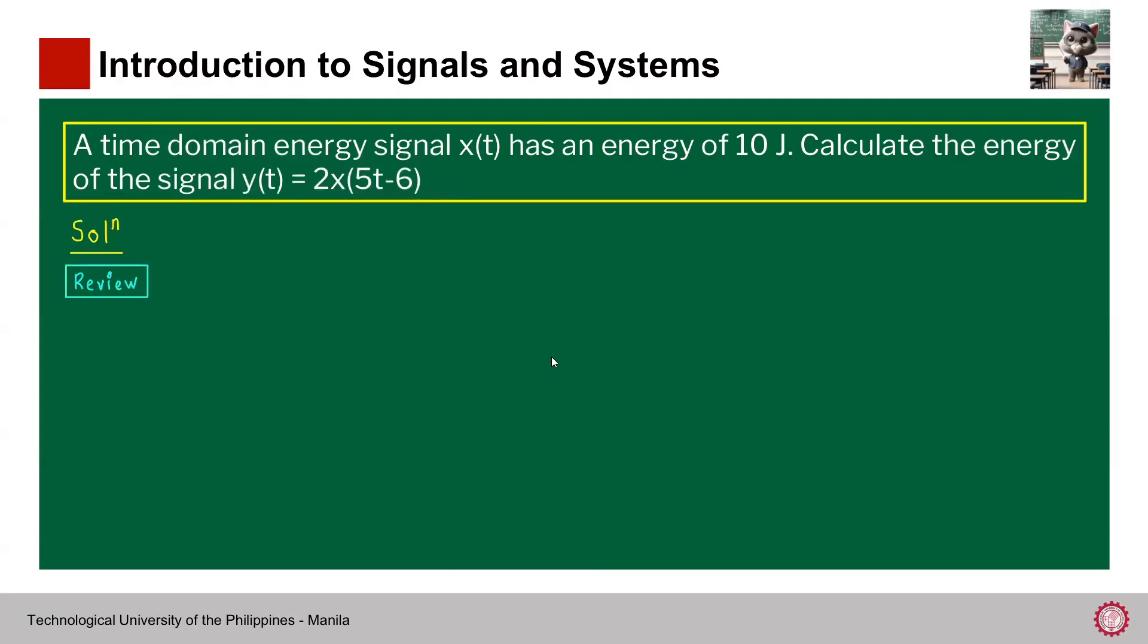So first, let's say that the signal x(t) has an energy of E. The energy of x(t) is capital letter E. Now, if we do amplitude scaling, we have k multiplied into x(t). So this is amplitude scaling. So what will happen is from E, the energy would become k squared E.